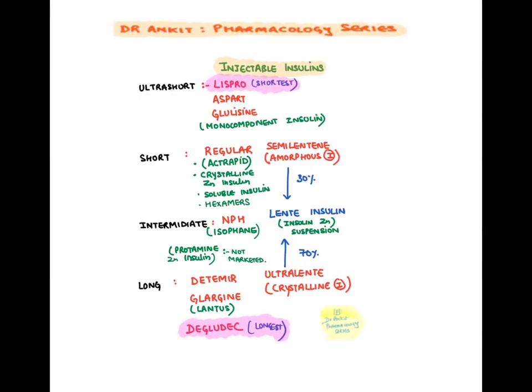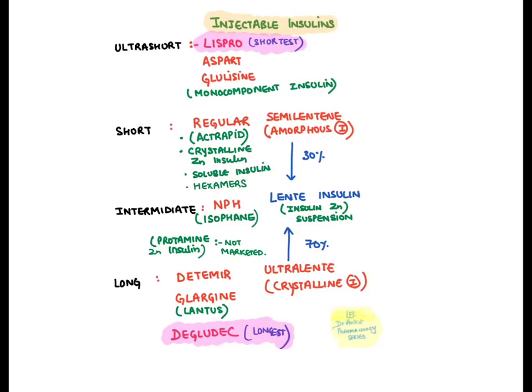The various preparations of insulin are: ultra-short, short, intermediate, and long. In ultra-short we have Lispro, Aspart, and Glulisine — they all have an 'S' word in between. Short insulin is regular insulin. Ultra-short and short insulins are given before meals to control postprandial hyperglycemia, while intermediate and long-acting insulins are given to control basal glucose levels. The shortest is Lispro; the longest is Degludec. Lente insulin is an intermediate-acting insulin — a mixture of semi-Lente and ultra-Lente in a 30:70 ratio. Semi-Lente is also known as amorphous; ultra-Lente as crystalline.